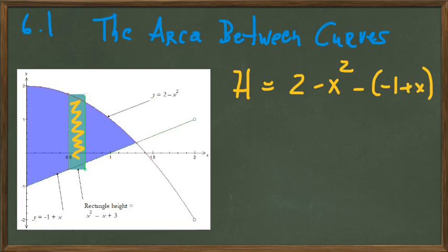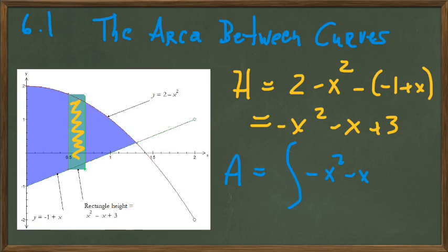And if we combine terms, we get that that rectangle's height is x squared minus x plus 3. Actually, that should be minus x squared minus x plus 3. So to determine the area of this region, we are going to integrate rectangles of this height, minus x squared minus x plus 3.